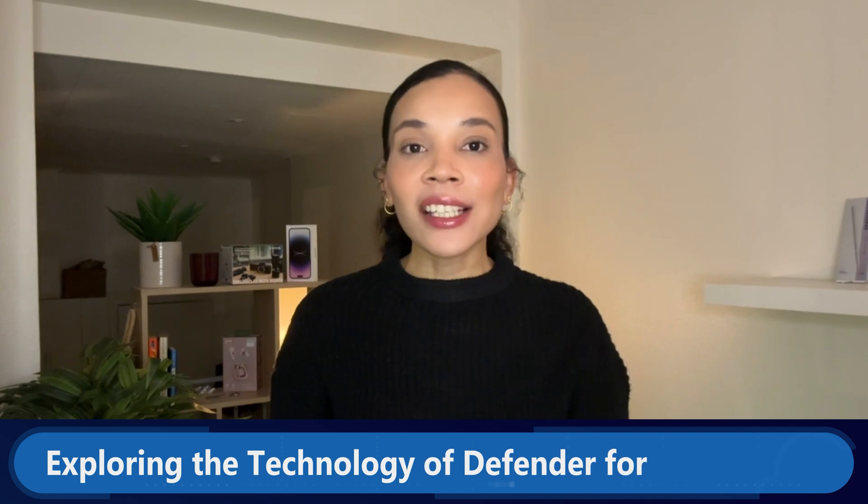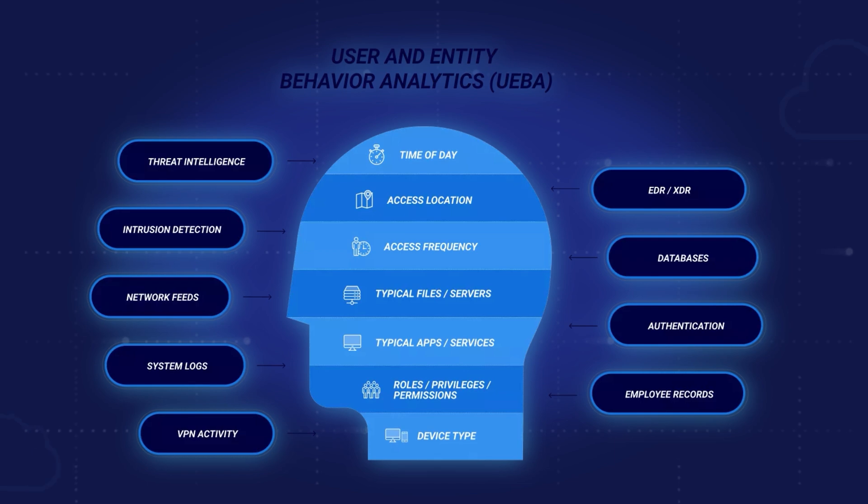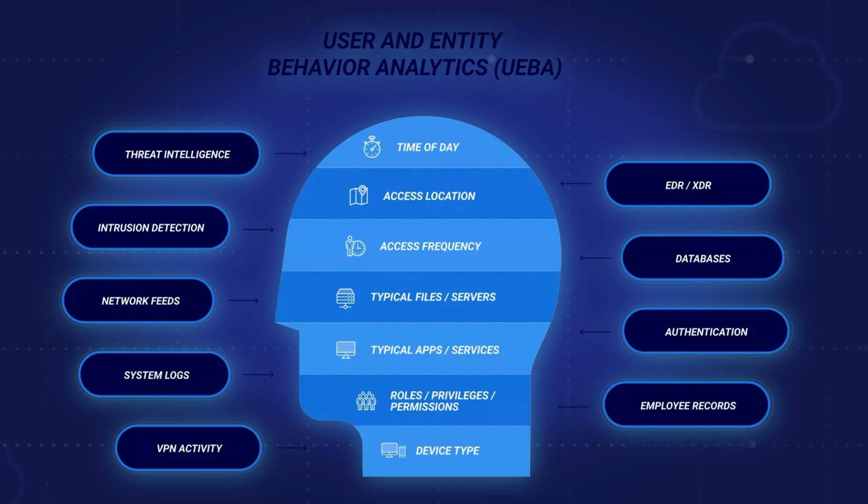Now let's dig deeper into the technology of Defender for Cloud Apps. There are some very specific technical capabilities that form part of this solution. First, using User and Entity Behavioral Analytics — UEBA — and anomaly detection policies, Defender for Cloud Apps finds unusual activities like large unexpected data downloads, signaling potential security breaches. It also includes features like data leakage prevention and integration with the Microsoft Information Protection Platform to prevent sensitive data from unauthorized external sharing.